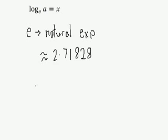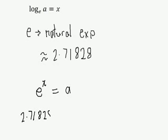So what does this mean? The same as we had written before when it was to the base of 10, now the base is e. So you'd say e to the power of x is equal to a. That's effectively saying that 2.71828 to the power of x is equal to a. That's the starting point. That's what this expression means.